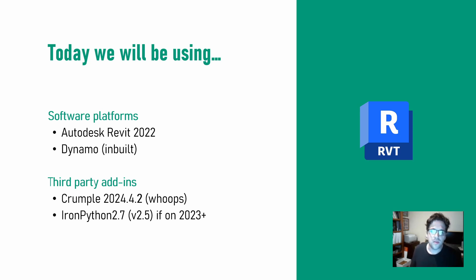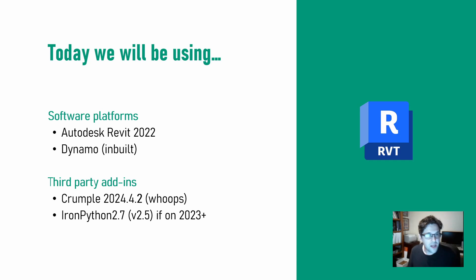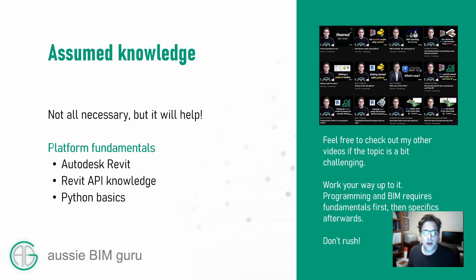I'm going to be using Crumple 2024.4.2, which I've only just released as a hotfix — the printing node had a bug in it. If you're on the 2024.4.1 release, make sure you update to 2024.4.2. I'll also be using a package that depends on IronPython, so you'll need the IronPython 2.7 version 2.5 package if you are in Revit 2023 or beyond.